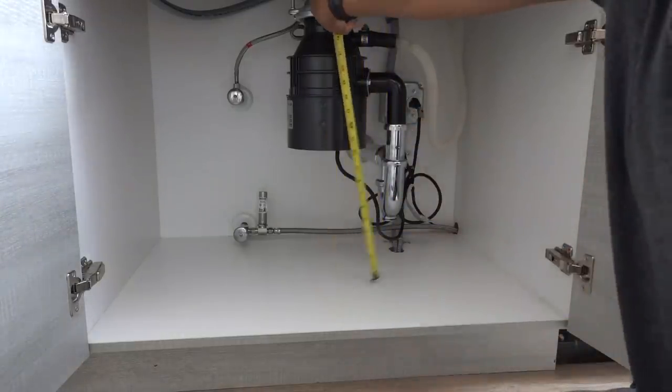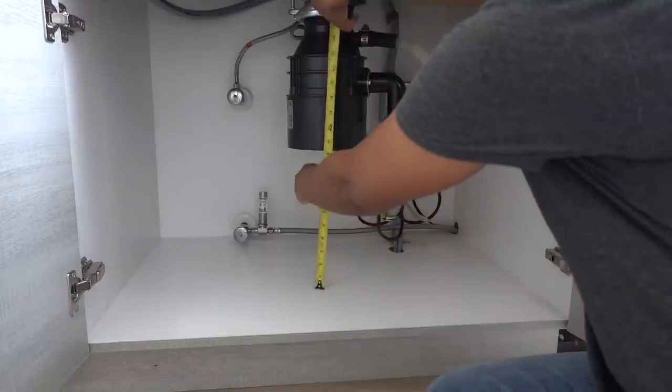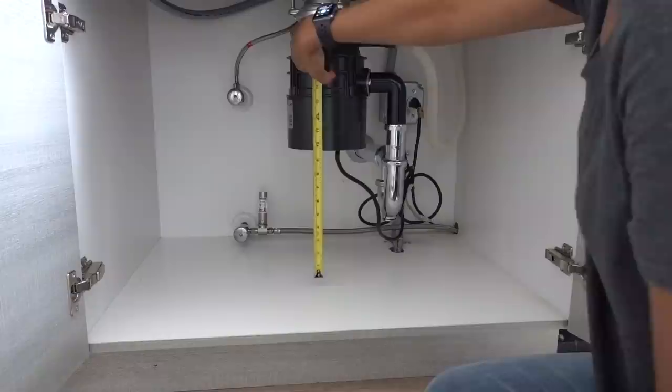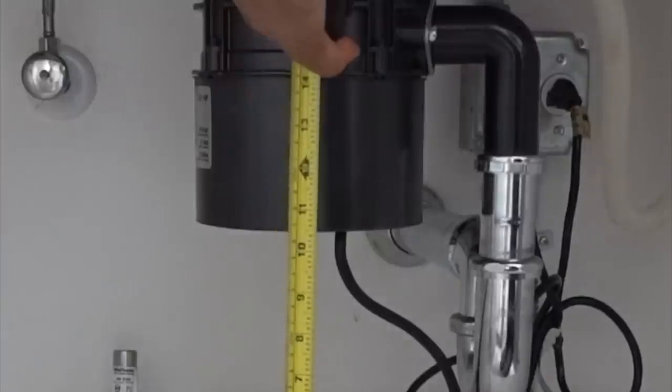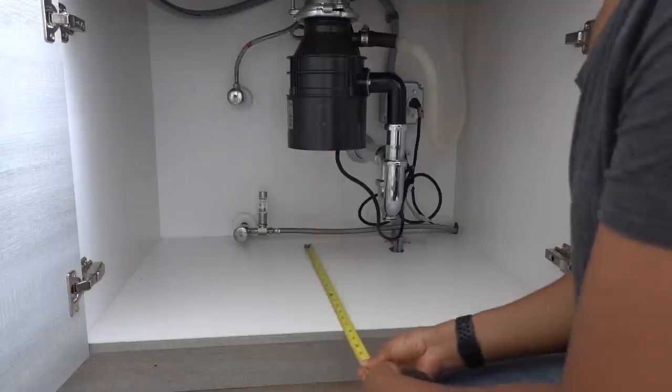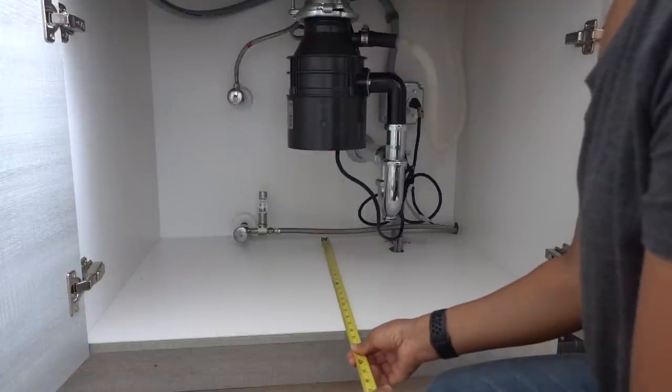So you wanna measure for those, and you also wanna measure underneath the garbage disposal. I like to give myself a little less, I like to be very conservative, so it says it's like 10 and a half inches, but I'm gonna say I can install anything under 10 inches in that space.